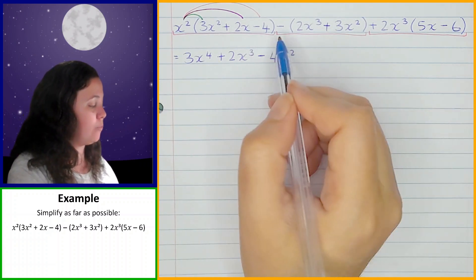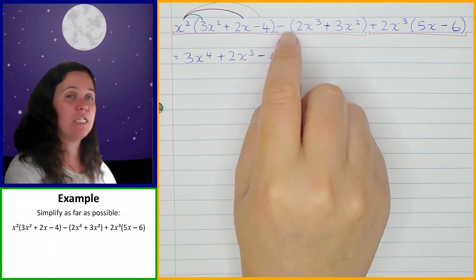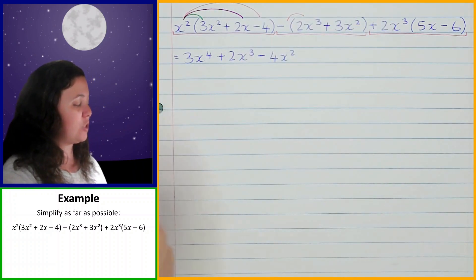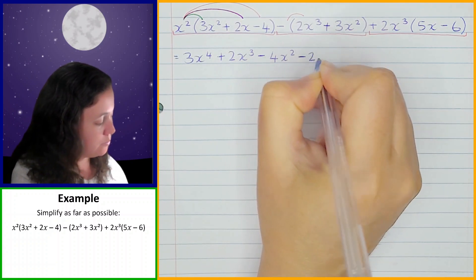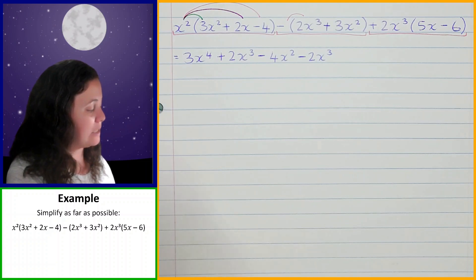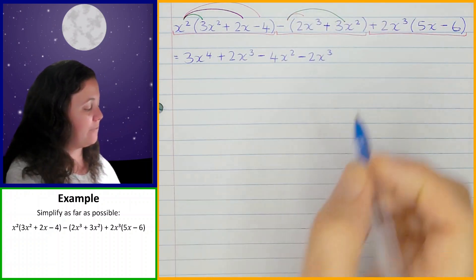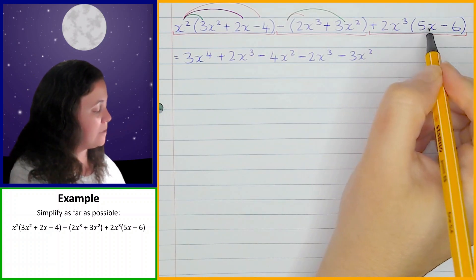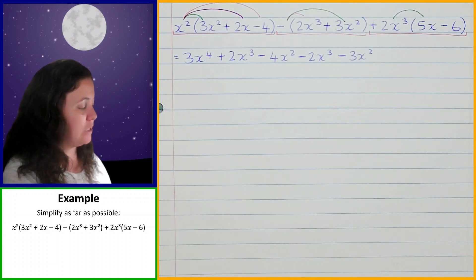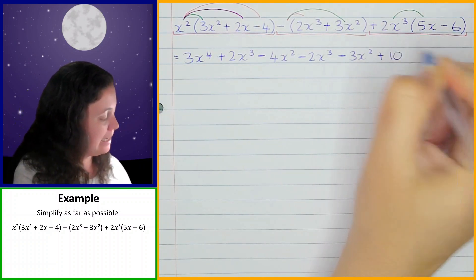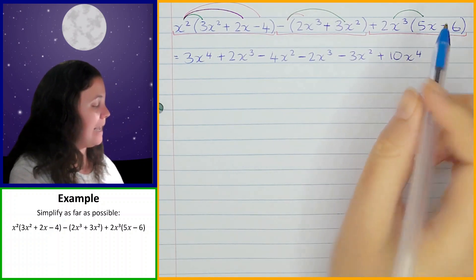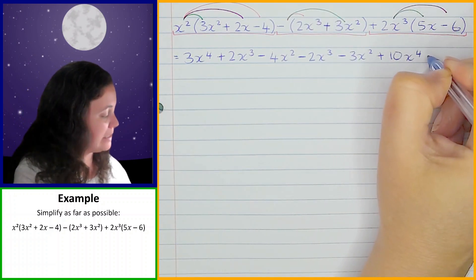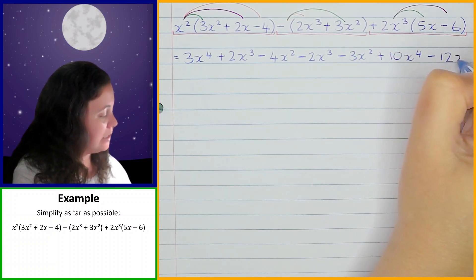For the second term, the negative means negative 1. Negative 1 times 2x cubed is negative 2x cubed, and negative 1 times 3x squared is negative 3x squared. Then for the third term, 2x cubed times 5x is positive 10x to the power of 4, and 2x cubed times negative 6 is negative 12x cubed.